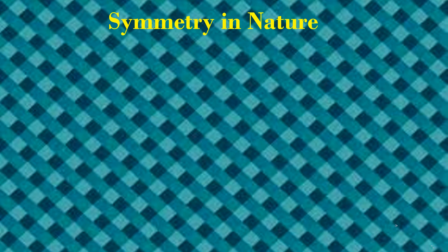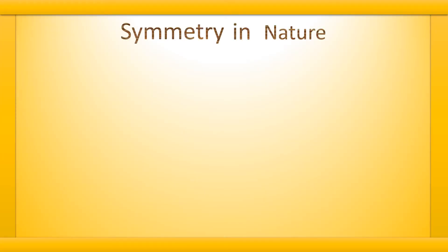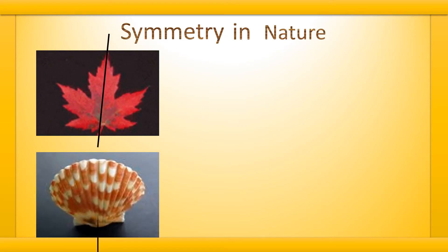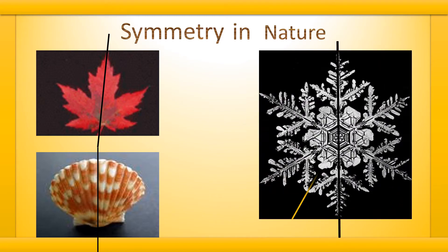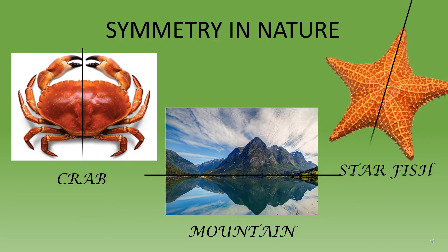Symmetry in nature. Examples of symmetry abound in nature — these are shape and color symmetry. The leaf has one line of symmetry. This is a sea shell and it also has one line of symmetry. This is a figure of a beautiful pattern and it has six lines of symmetry. More examples of symmetry in nature are crab, mountain, and starfish.